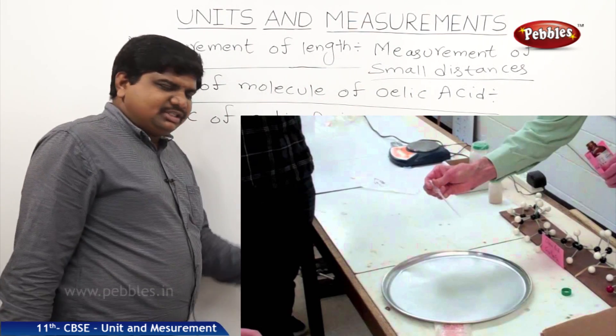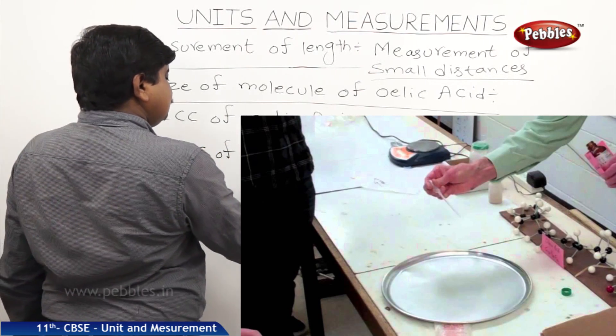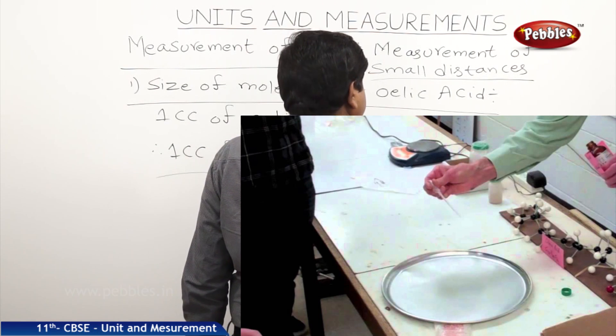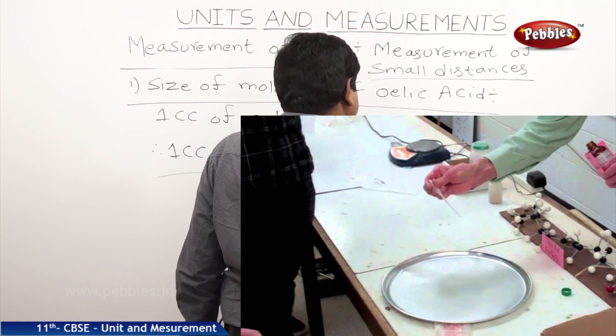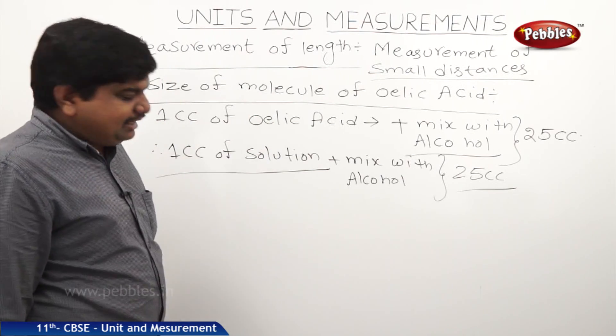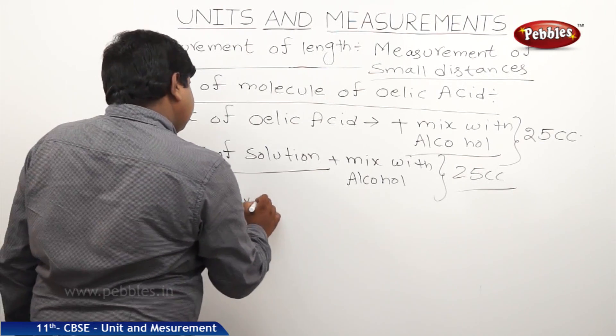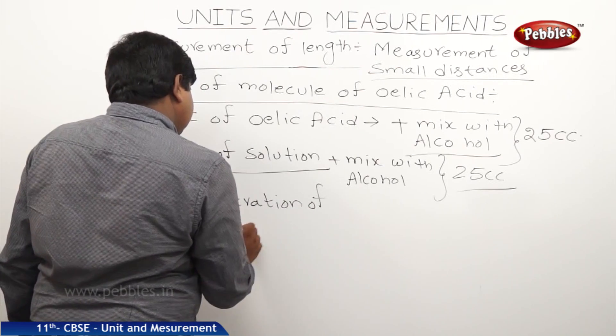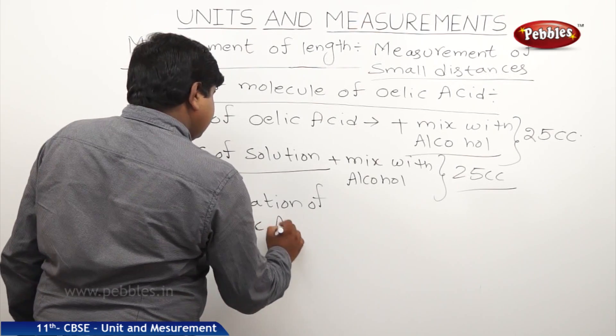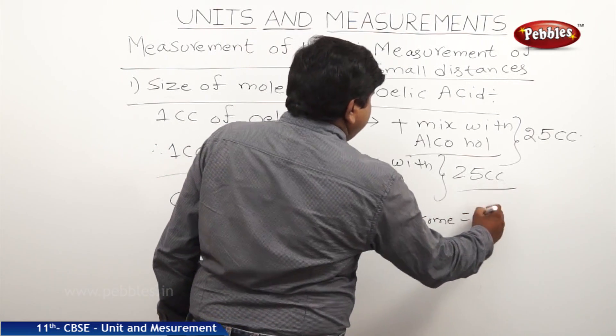In this solution, take one cc of solution and again mix with alcohol to prepare again 25 cc of solution. This process should be repeated such that the concentration of oleic acid should become 1 by 500 times.